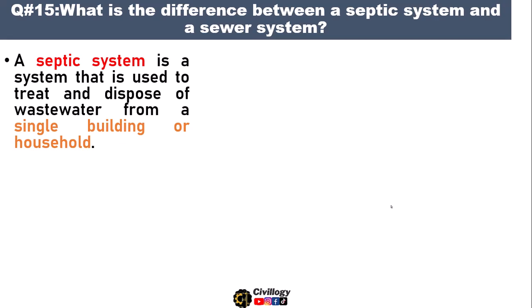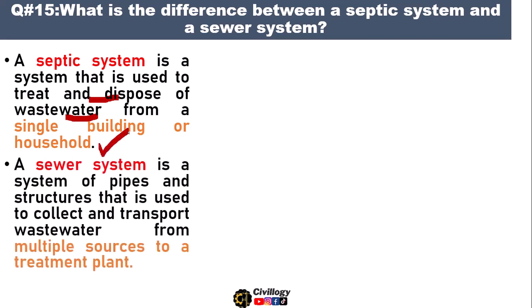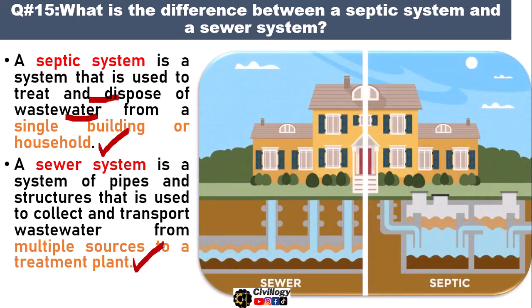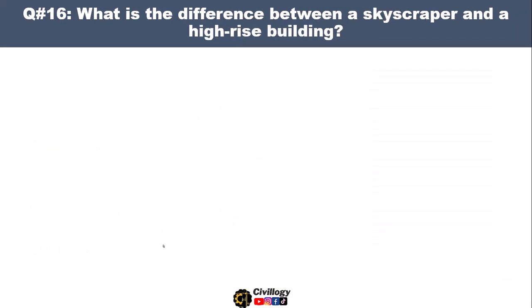Question number fifteen: what is the difference between a septic system and a sewer system? A septic system is a system that is used to treat and dispose of wastewater from a single building or household. Whereas a sewer system is a system of pipes and structures that is used to collect and transport wastewater from multiple sources to a treatment plant.